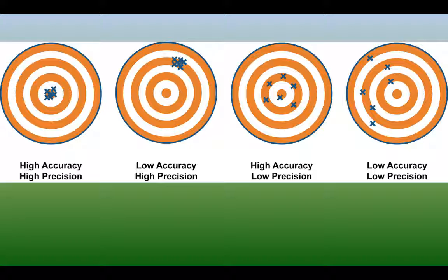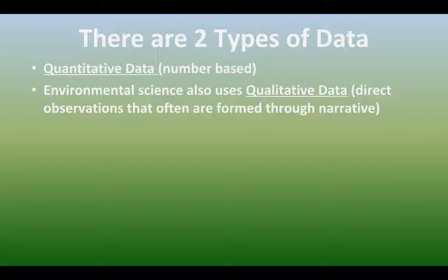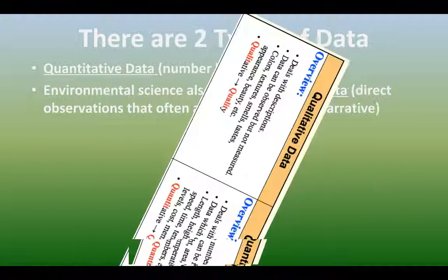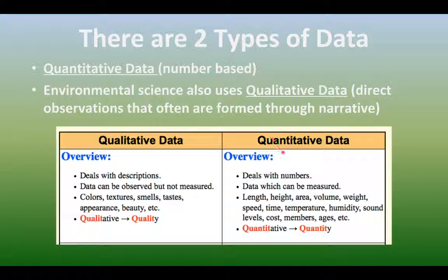The far left is what we're looking for in environmental science. We want our repeated experiments that have high accuracy and high precision. And finally, as we go throughout the scientific method, there's two types of data we're going to collect. Quantitative is numbers. We're just looking at numbers here, and I apologize, it's kind of flipped around. Quantitative is over here.